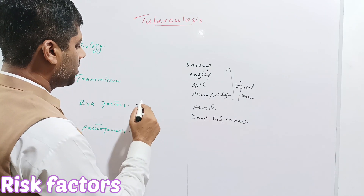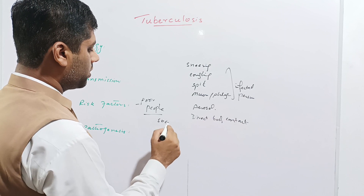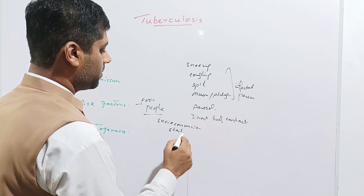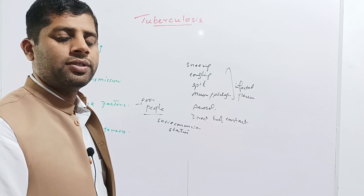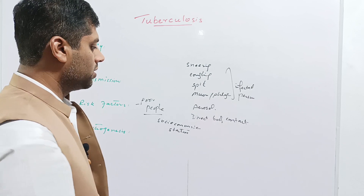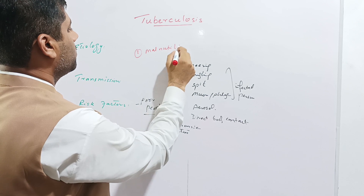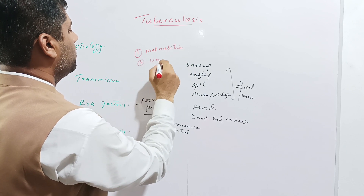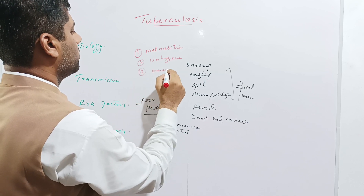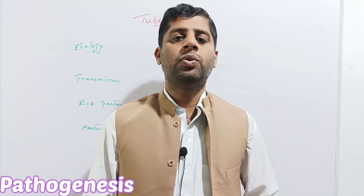Tuberculosis is known as a disease of poor people with low socioeconomic status. Low socioeconomic status increases the chances of infection. There are three key risk factors: malnutrition, which weakens the immunity of the body; unhygiene; and overcrowding. These three factors increase the opportunity for tuberculosis infection.